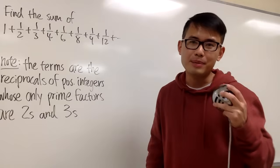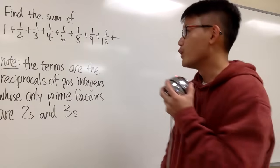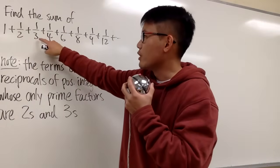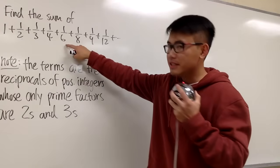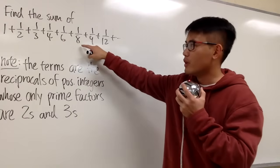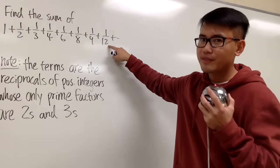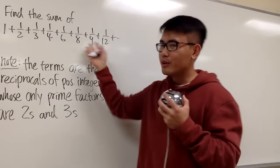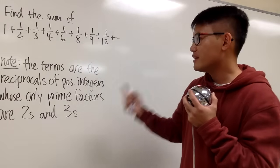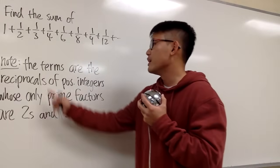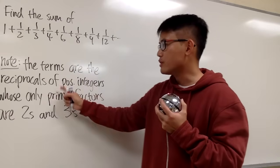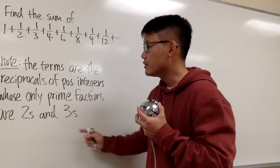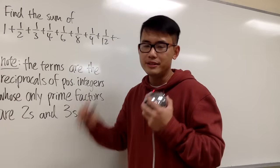Let's do some math for fun, and this is about infinite series. We are going to find the sum of 1 plus 1/2 plus 1/3 plus 1/4 plus 1/6 plus 1/8 plus 1/9 plus 1/12, and so on. It's kind of hard to see the pattern right here, but here is a note: the terms are the reciprocals of positive integers whose only prime factors are 2s and 3s.